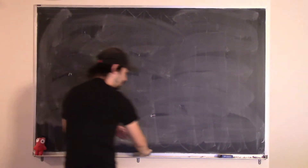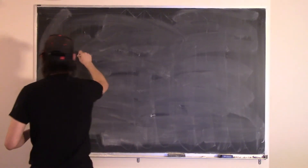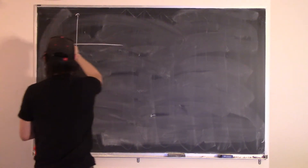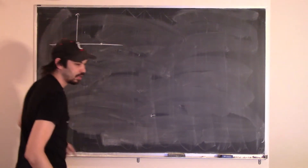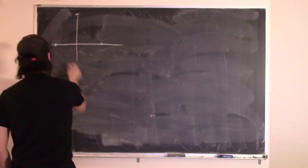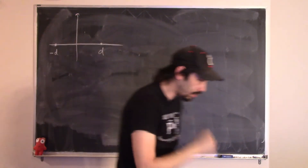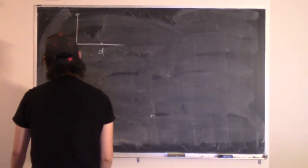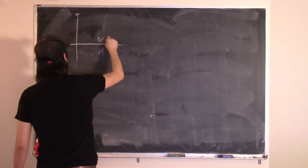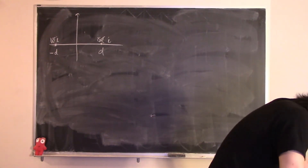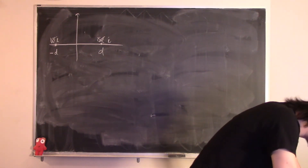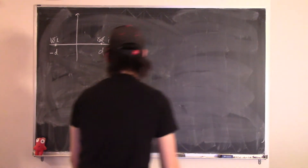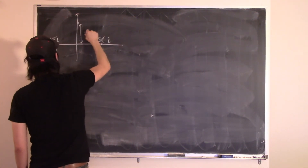The problem states: you have two infinitely long wires on the x-axis, one at x = −D and one at x = +D. Both carry current I into the page. We want to find the x, y, and z components of the total magnetic field at the point x = 0, z = 0, y = h.